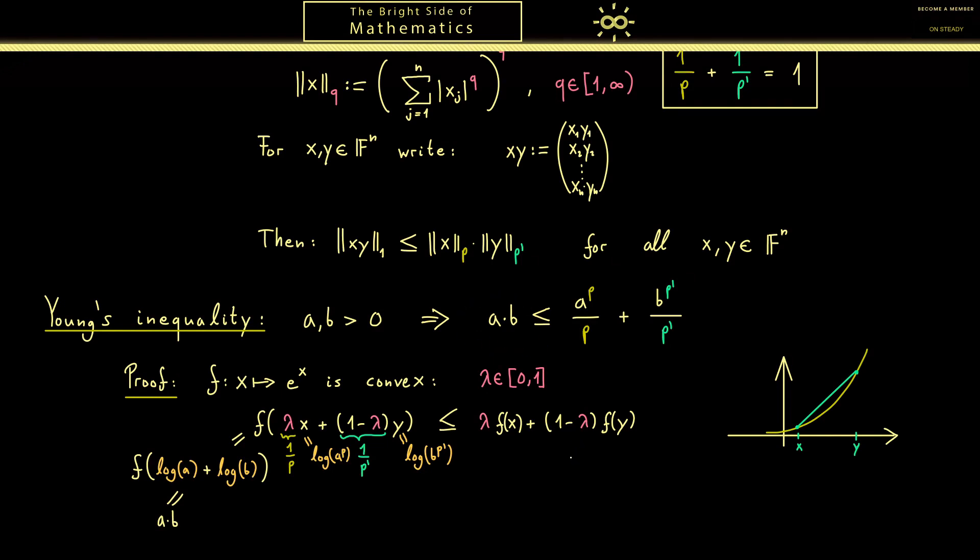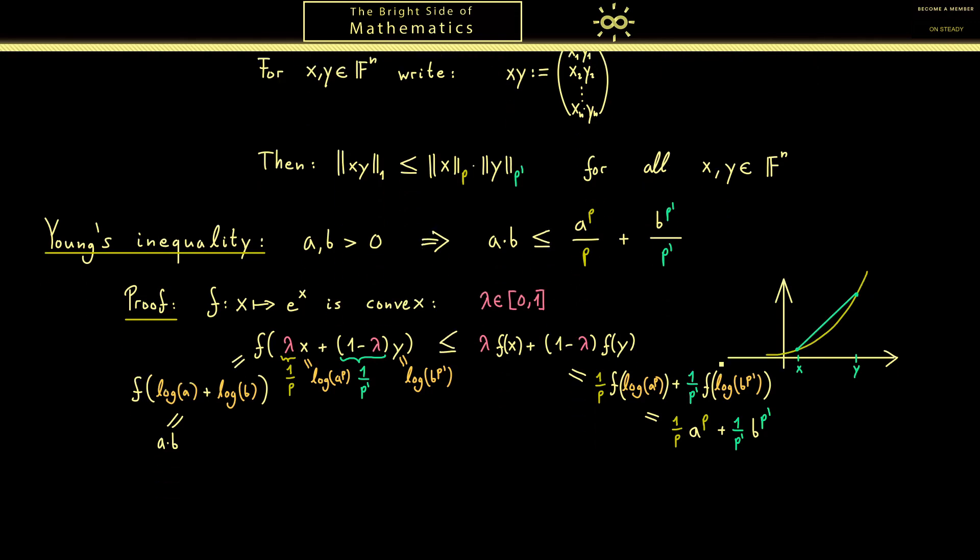Regarding the right hand side, we just put in all the numbers we already know. Now this looks more complicated than it really is because we have again the inverse function of the logarithm here. Hence this all vanishes and what remains is what we wanted to show. So Young's inequality is correct and we can use it to prove Hölder's inequality.